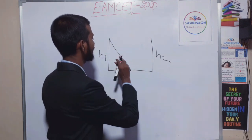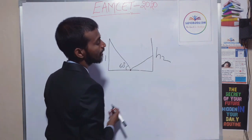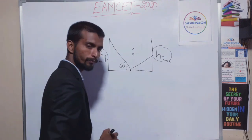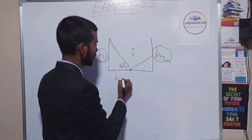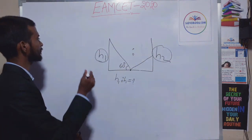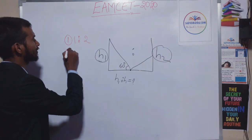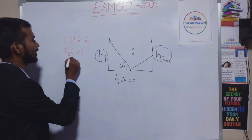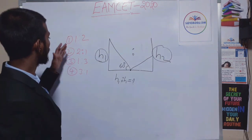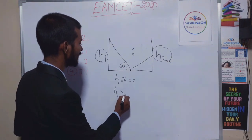So we have drawn 60 degrees on this side, and 30 degrees on the other. Now they just want the H1 to H2 ratio. If you look at the options: first option is 1 is to 2, second option is 2 is to 1, third option is 1 is to 3, fourth option is 3 is to 1. From the figure, you can find out that H1 is greater than H2, because it is making 60 degrees and the other is making 30 degrees.